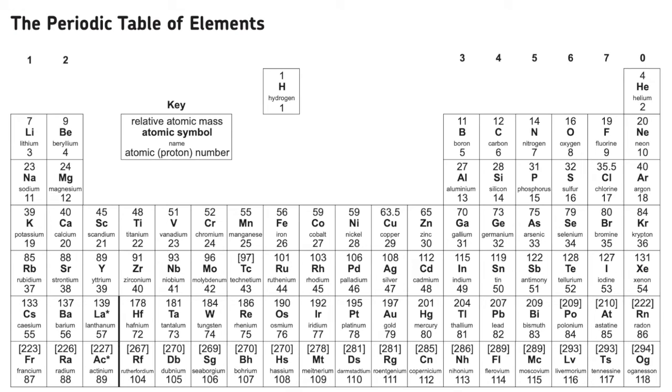So here is a copy of the modern periodic table which contains the 118 elements that we know of. Every element has its own unique symbol and the big number is the relative atomic mass and the small number is the atomic number.